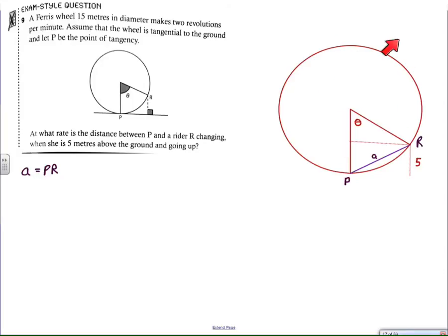If we rotate to 2π, then the distance between P and R would be zero because they would be concurrent points. Now, I have to figure out how fast this line segment A is changing at the exact moment when the rider is 5 meters above ground on the way up. In other words, the Ferris wheel is going this way, and at this exact moment in time, how far away is the rider from the operator?